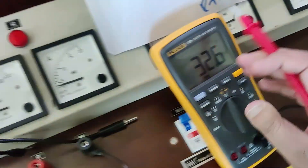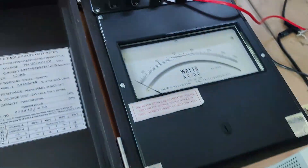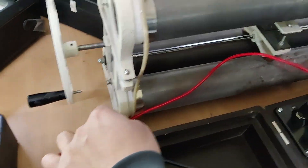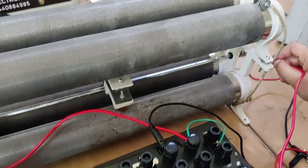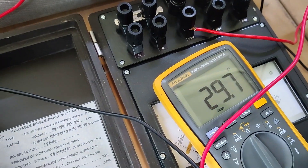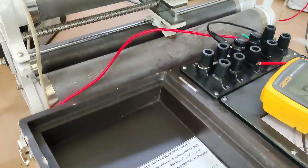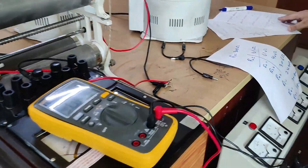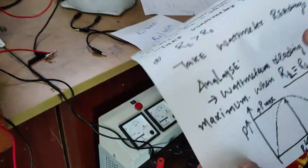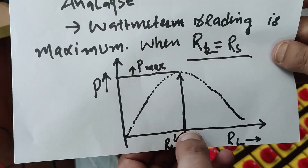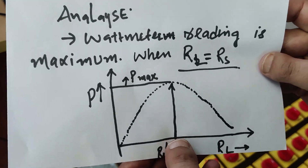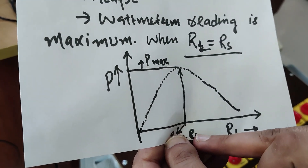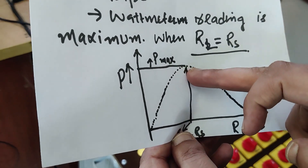Look, the load resistance is 32.6 ohm and our source resistance is almost 30 ohm — so they are almost the same. This is what we have to demonstrate: when the source resistance is equal to the load resistance, that is where we get maximum power. This will be the graph — when we plot the graph between the power and the load, you can see that when source resistance equals load resistance, that is where we get the maximum power.